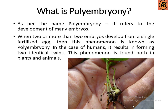Hello guys, welcome to another video. In this video we are going to learn about polyembryony. As the name suggests, polyembryony refers to the development of many embryos from one egg. When two or more than two embryos develop from a single fertilized egg, this phenomenon is known as polyembryony. In the case of humans, it results in forming two identical twins. This phenomenon is found both in plants and animals.